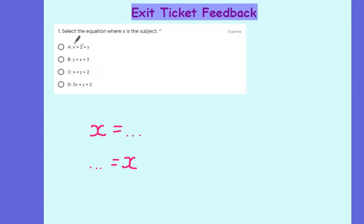So the first one, I've got x plus 2 on one side, so it's not that one. The second one, I've got x plus 3 on one side, so it can't be that one. The last one's got 3x, that's not x on its own, so it can't be that one. So the correct answer was c.